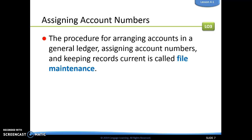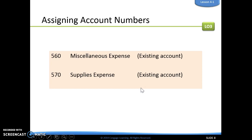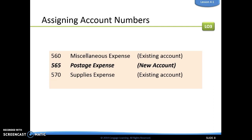File maintenance is the procedure for arranging accounts in a general ledger, assigning account numbers, and keeping records current. Here we have two expense accounts: miscellaneous expense at 560 and supplies expense at 570. Expense accounts are listed in alphabetical order. If we add a new account called postage expense, it falls between miscellaneous and supplies, so we give it the account number 565. The 5 signifies it is an expense account, and 65 shows it comes between miscellaneous and supplies on the chart of accounts.